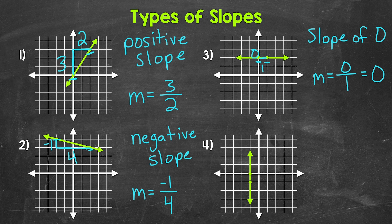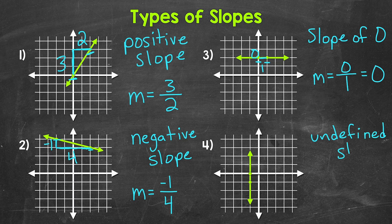Moving on to number four, we have a vertical line. So there's vertical change, but no horizontal change here — no movement left or right at all. The Y values are changing, but the X values stay the same. This is what we call an undefined slope.